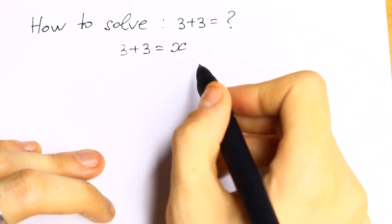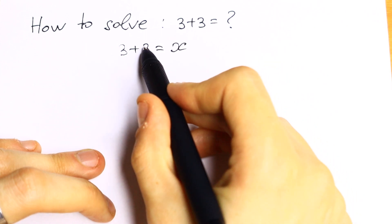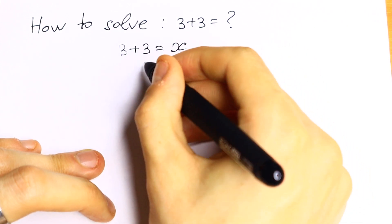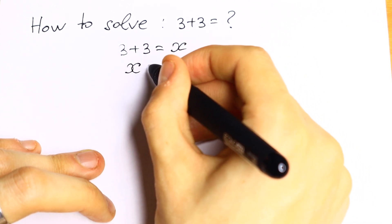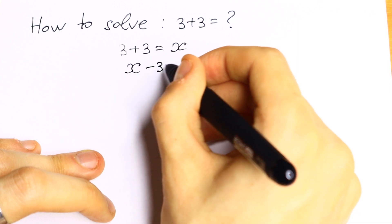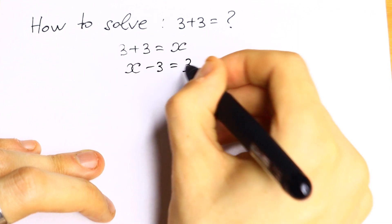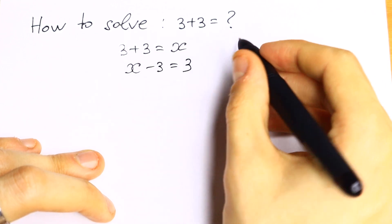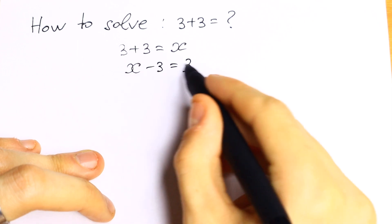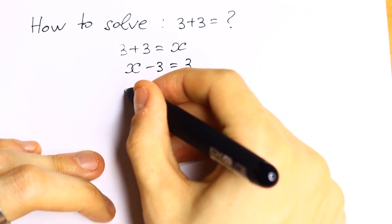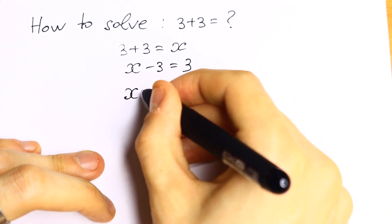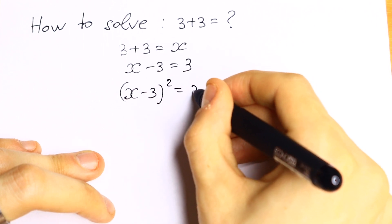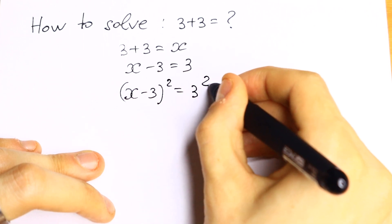What we're going to do next, let's simplify this a little bit. Let's bring the 3 on the right side. On the left side we'll have that x minus 3 equal to 3. This is not a good equation for us, so let's raise both sides to the second power. We'll have that x minus 3 to the second power equal to 3 squared.